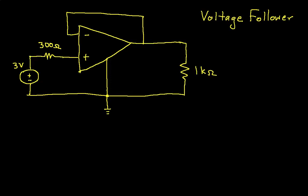This op-amp circuit is called a voltage follower, and you can see that the output of the op-amp is connected back to the inverting input, and the non-inverting input is connected through a 300 ohm resistor to a 3 volt source.